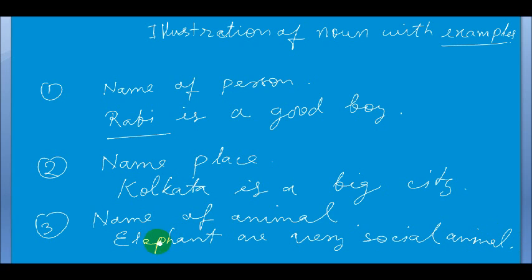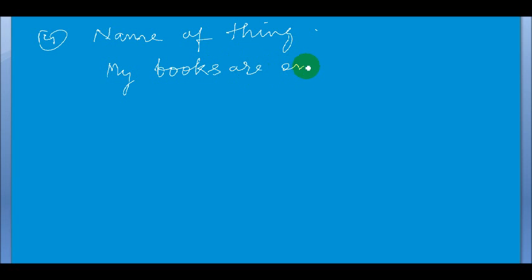Number four, I am giving name of thing. My books are on the table. Here books is the name of thing.